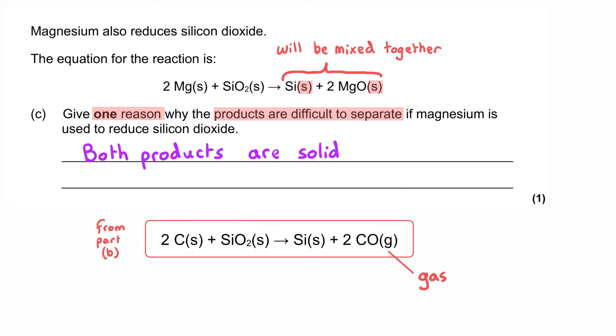It's far easier to allow the products to naturally separate when one of them is a gas, because that gas will just leave the reaction mixture and the silicon will be present by itself. But when we use magnesium, both of the products are a solid.